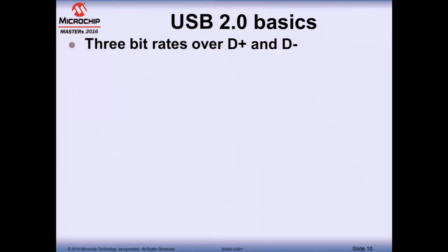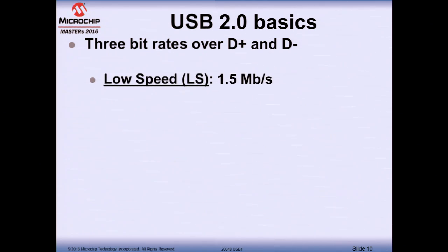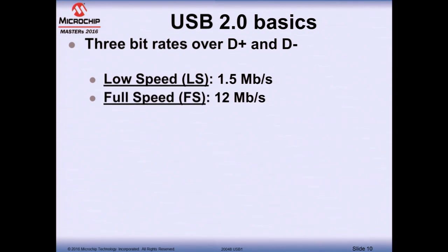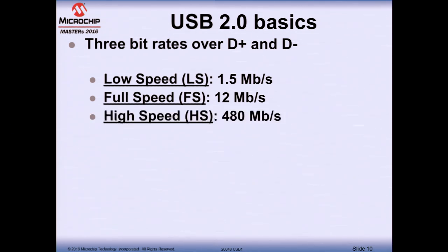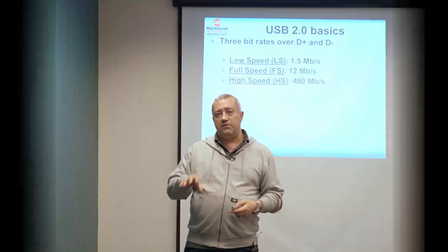There are three bit rates for communication over the D+/D- differential pair. The first is Low Speed (LS) at 1.5 Megabit per second. The second is Full Speed (FS) at 12 Megabit per second. The third is High Speed (HS) at 480 Megabit per second. All Microchip PIC families support Low Speed and Full Speed, but for High Speed you need to go with the 32-bit family.